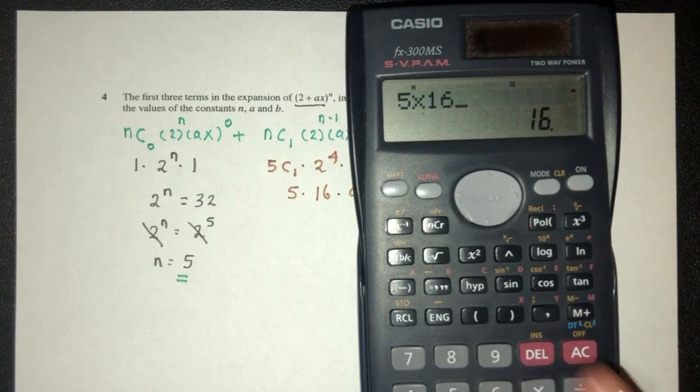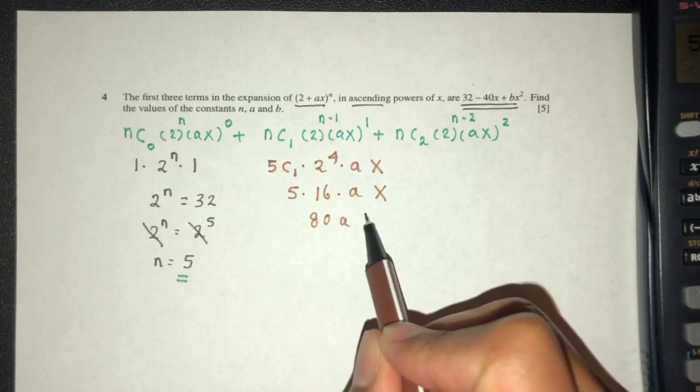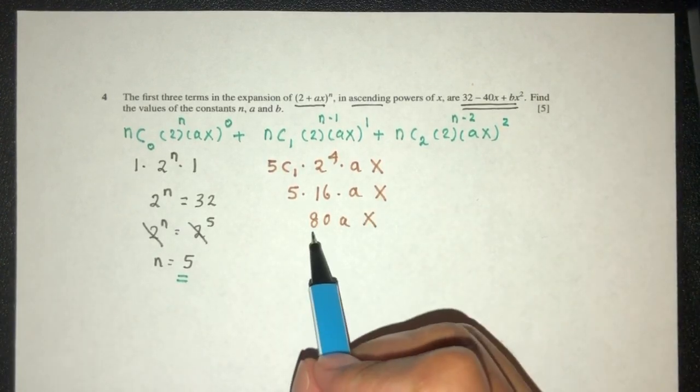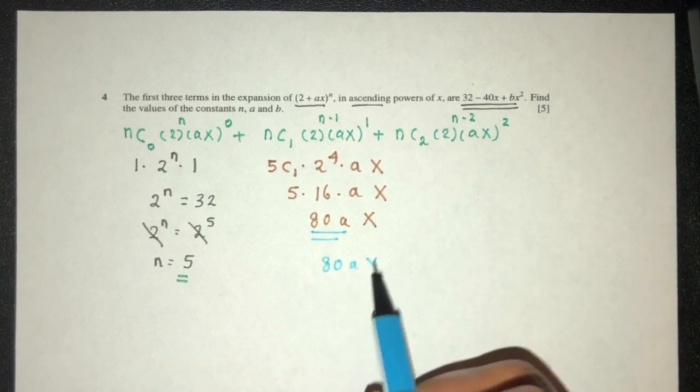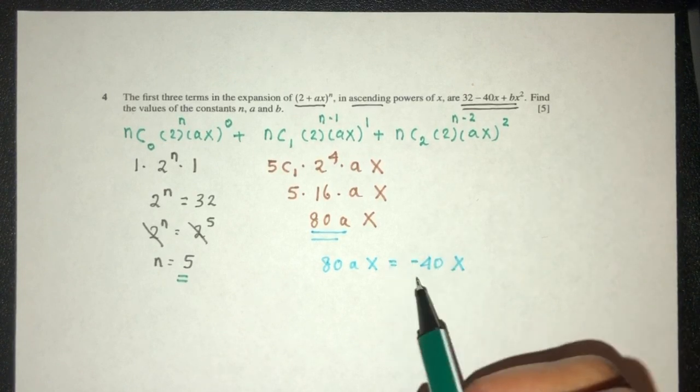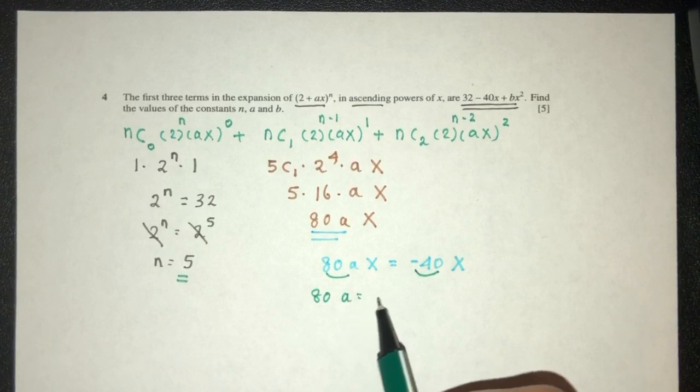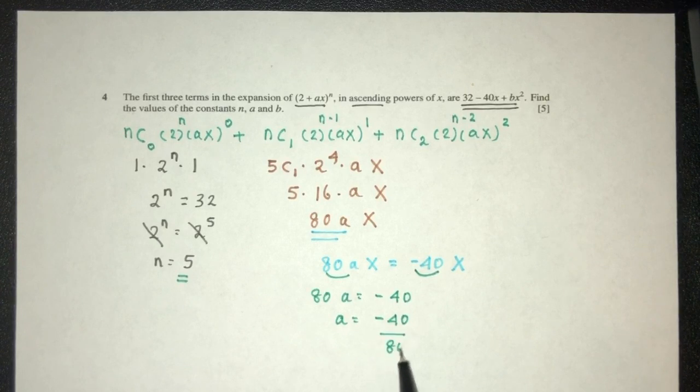Times a and x. Now, what is 5 times 16? Let's find out, that should be 80. So 80ax will be the second term. But now we know that this is equal to this. So 80ax have to be minus 40x. By comparison, this have to be this. So 80a have to be minus 40. A have to be minus 40 divided by 80, which will be minus half.